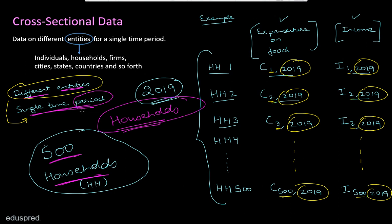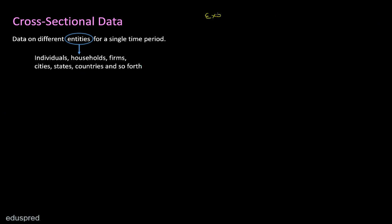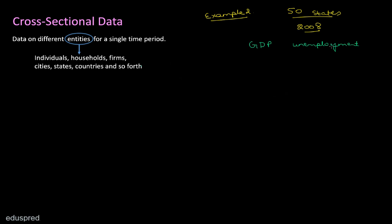Let me give you one more example for cross-sectional data. In example two, let's say we are collecting data on 50 states for the year 2008. The variables we are collecting are GDP and unemployment. Note that it's not necessary to collect data on only two variables — you can collect data on as many variables as you think are relevant to your study.